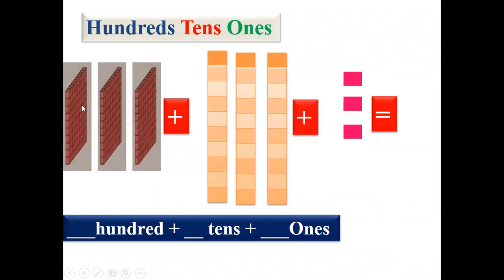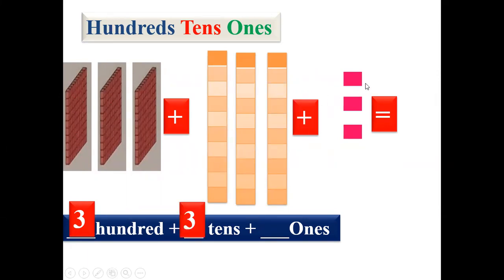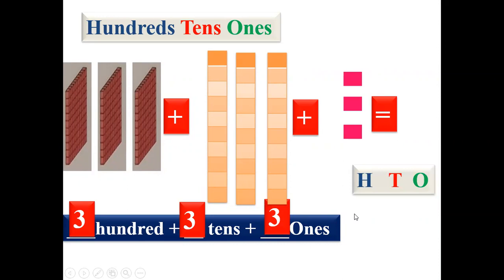Now look at these three hundreds. We can see this full block representing hundreds, so let us count: one, two and three — three hundreds, we'll write three. Now how many columns are there for tens? One, two, three — so we'll write three. And here three different units, that is ones: one, two, three — we'll write three ones. So we'll write three in hundreds, three in tens and three in ones.